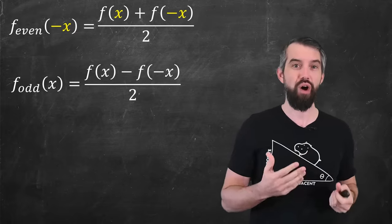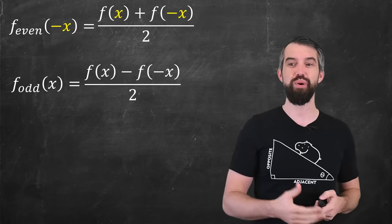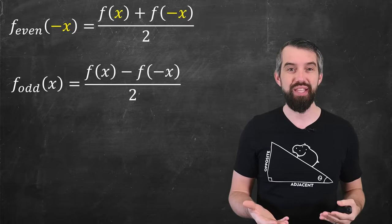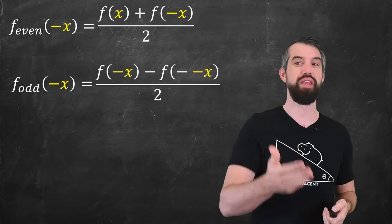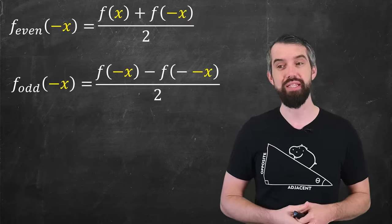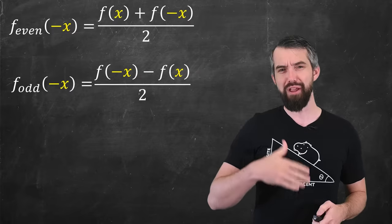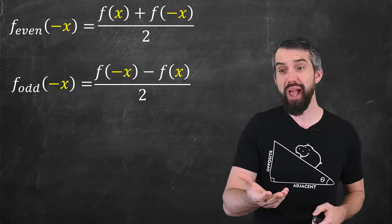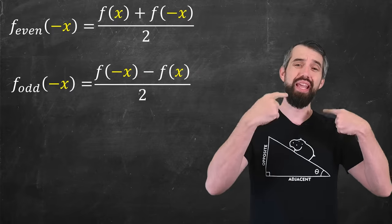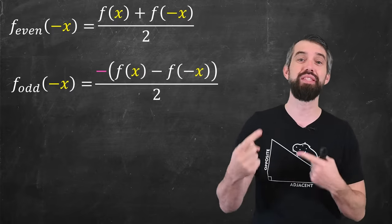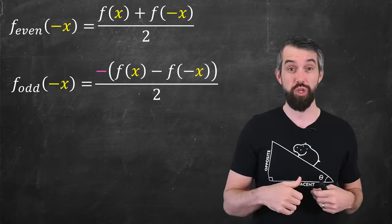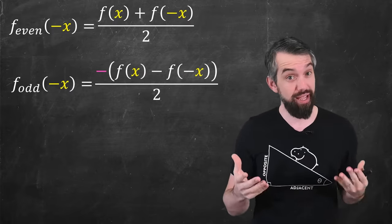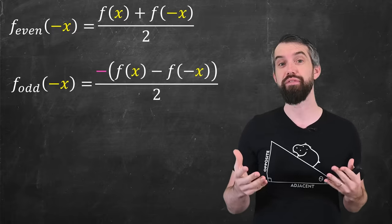In contrast, with f-odd, if I put negatives in everywhere, the negative of the negative cleans up. When I flip this around, it's now got a negative stuck out the front. So f-odd is indeed an odd function.